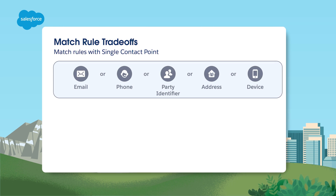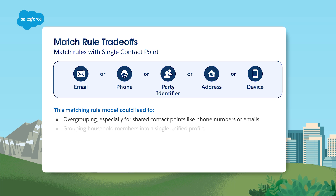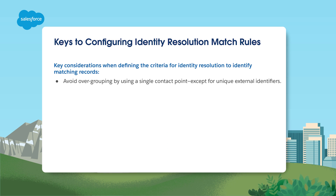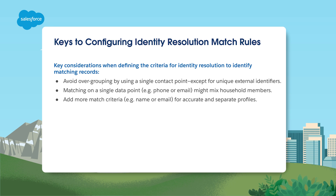This matching rule model could lead to over-grouping. You may end up merging too much, particularly with shared contact points like phone numbers or emails. This could mean grouping all household members into a single profile, which might not be right. To ensure accurate profiles, avoid over-grouping, match on multiple criteria, and use additional data points like names or emails. Keep these considerations in mind for effective identity resolution.